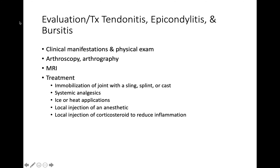Treatment includes immobilizing the joint with a sling, splint, or cast, and using systemic analgesics to manage pain. Ice or heat applications are used — current common practice alternates heat for 20 minutes and ice for 20 minutes. Local injection of an anesthetic or corticosteroid may be used, along with an AINE for pain relief directly into the joint, while the steroid reduces inflammation.